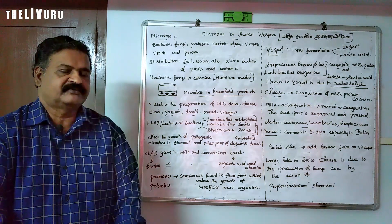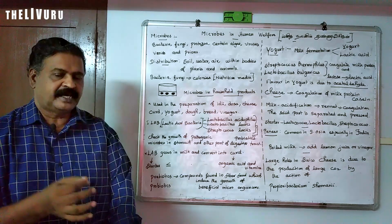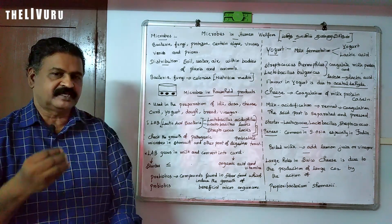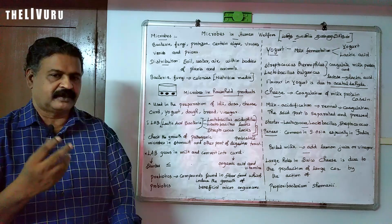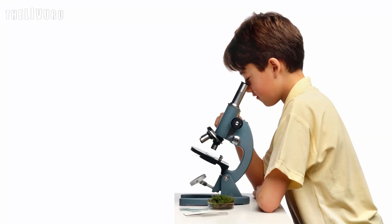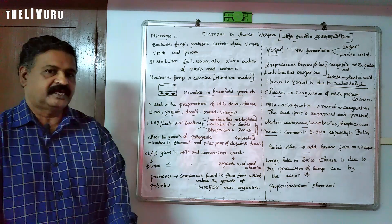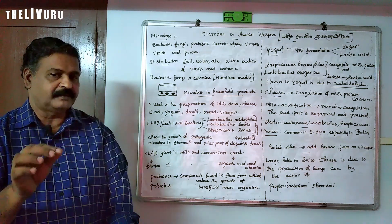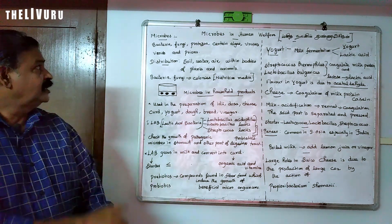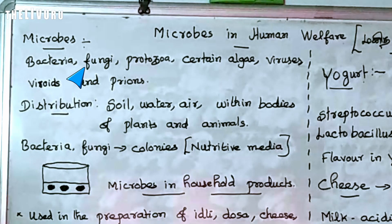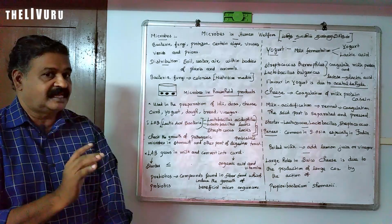We can start with the definition of microbes. Microbes means micro-organisms which we cannot see with our naked eye — micro-organisms which we can see only with the help of microscopes. Examples include bacteria, fungi, protozoa, certain algae.